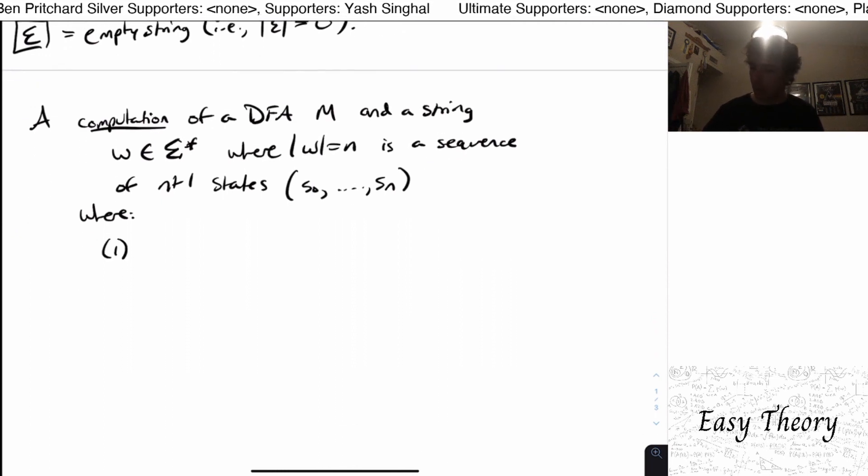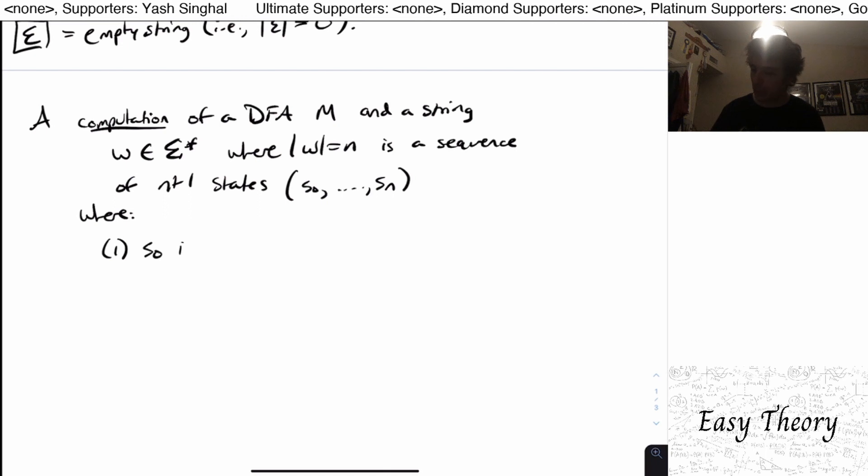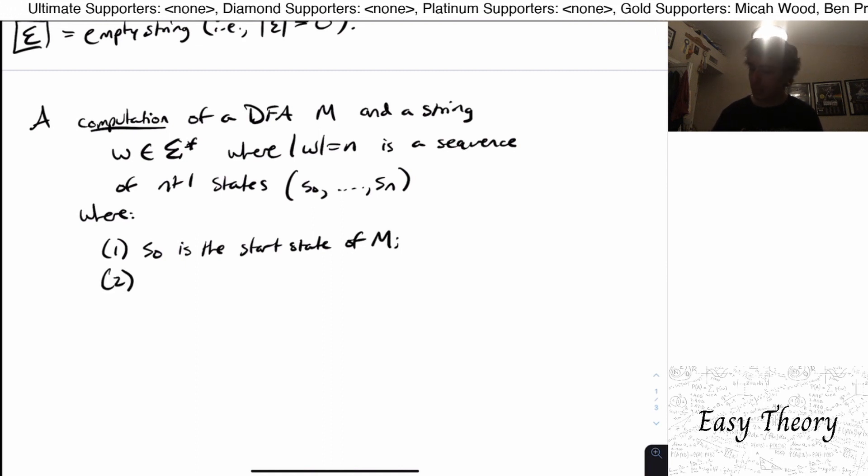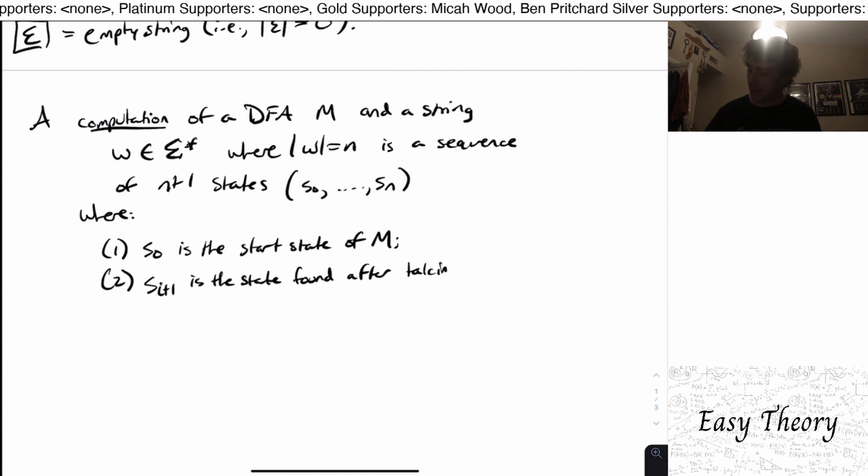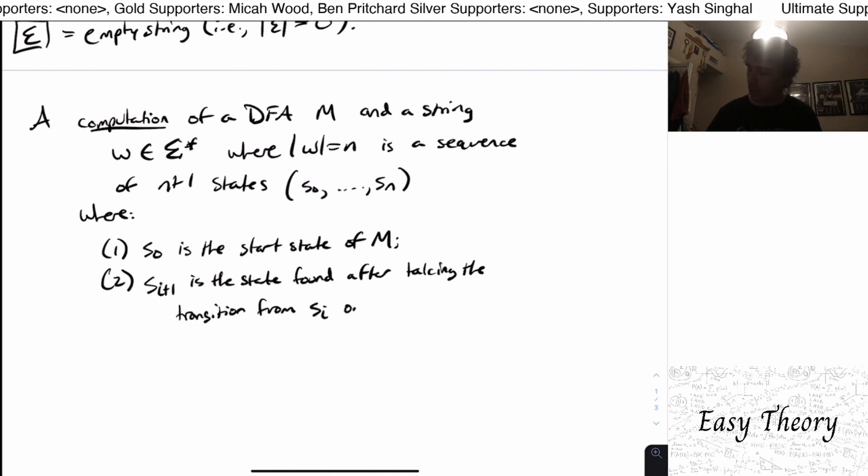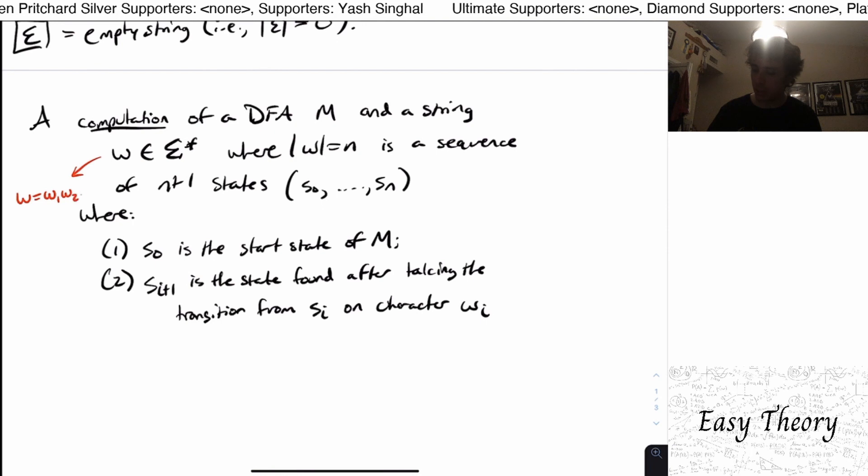I can't just list any old states in any old order. Well, let's see, well, we have to make sure that the start, the first state in this sequence is the start state in the DFA. So s0 is the start state of M, we got to make sure that that's true. And s sub i plus one is the state found after taking the transition from s sub i on character wi. And what is wi? What we're going to reference the string to be is that w is equal to w1 w2 up to wn.